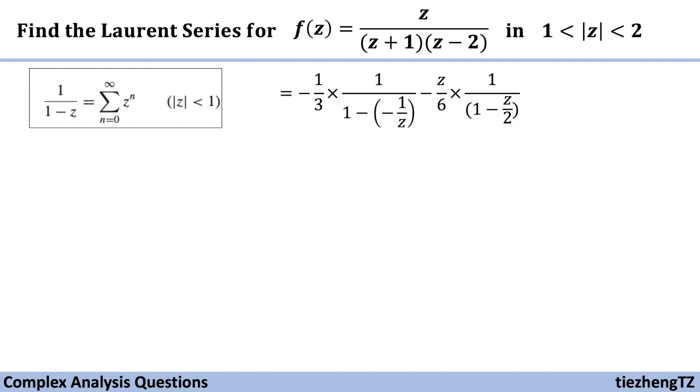Now compared to this given Laurent series form we have 1 over 1 minus. We also have 1 over z and z over 2. And their range is less than 1. So now we can say it is appropriate to just substitute into this given format.